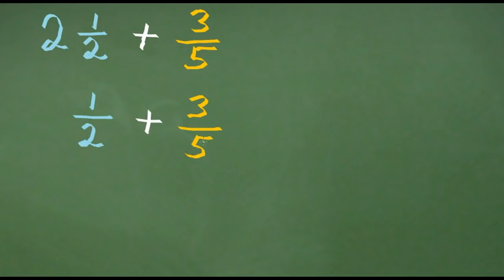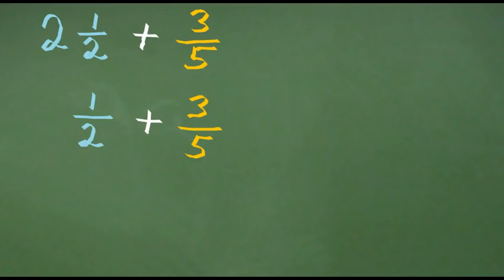To add one-half and three-fifths, as you may have seen in the other video on adding simple fractions, we need to make our denominators the same. The denominators are the numbers on the bottom — the two and the five. To do that in this calculation, we have to find the lowest common multiple of two and five. You can see this in a different video if you're not sure how to find the lowest common multiple. The lowest common multiple of two and five is ten, so we need to multiply the two by five to get to ten, and the five by two to get to ten, to make sure we've got the same denominator on both sides.